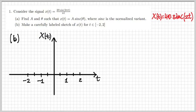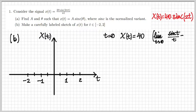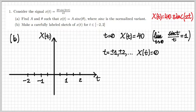We already know from theory classes that the behavior of the sinc is that of an oscillating function which has a peak at the origin. So let's start from the origin. When t is 0, the value of x of t is precisely 40 — that's because the limit of sine(t)/t is 1 when t goes to 0. What about for t integer, positive or negative, such as plus or minus 1, plus or minus 2, etc.?